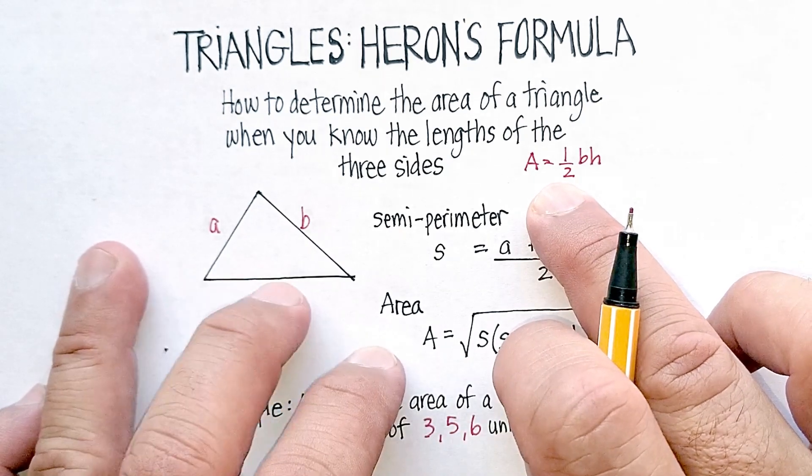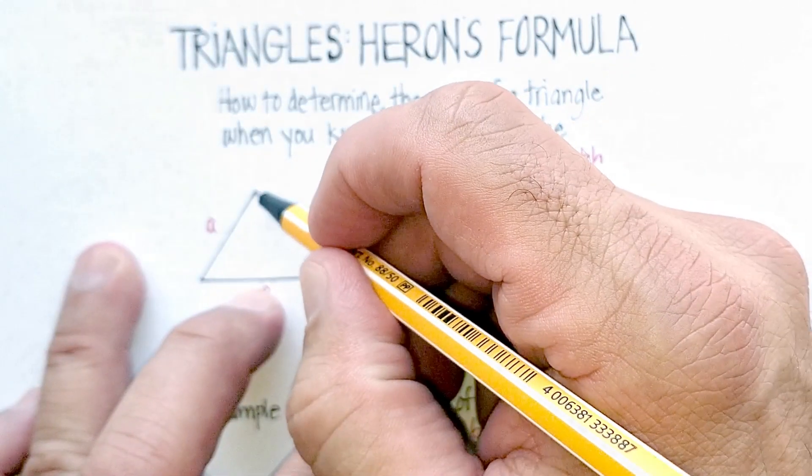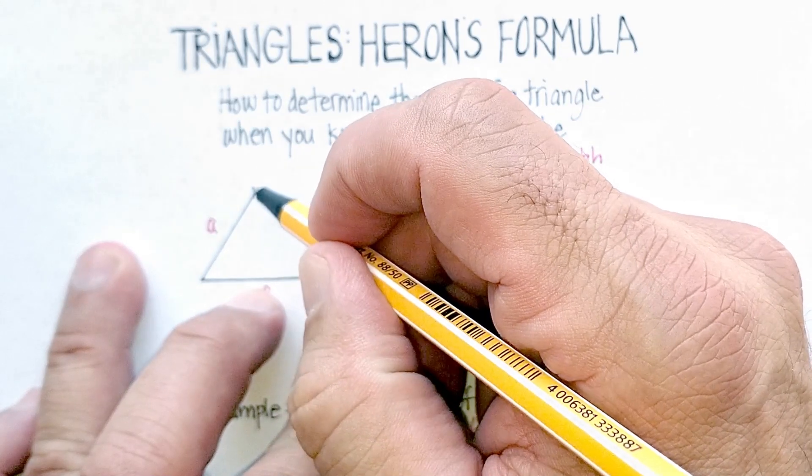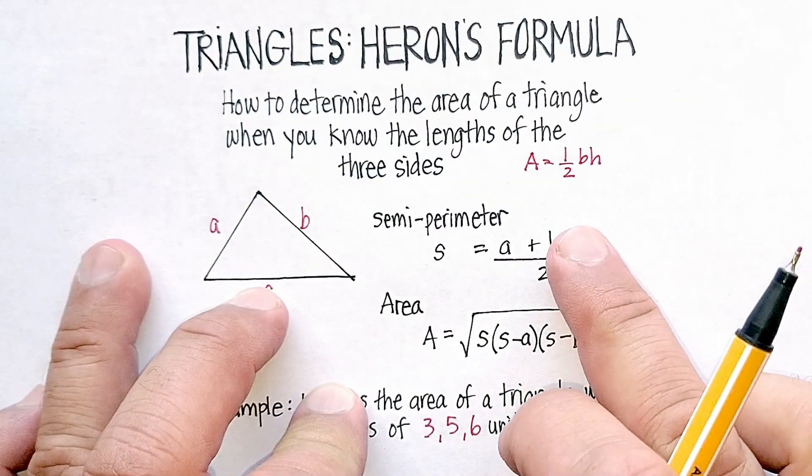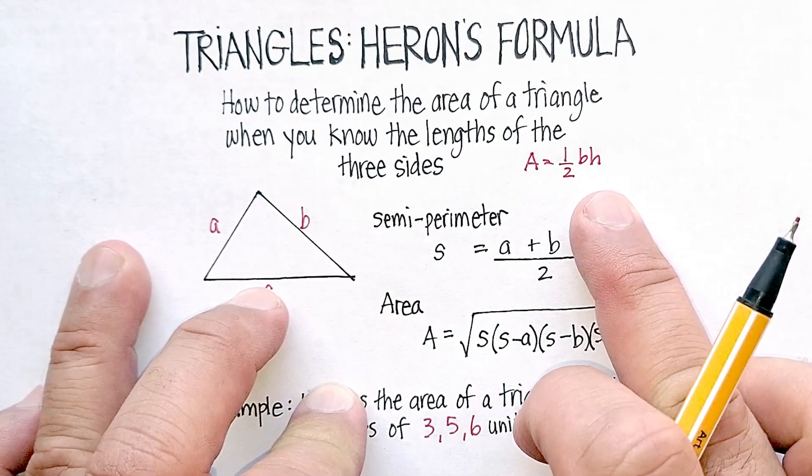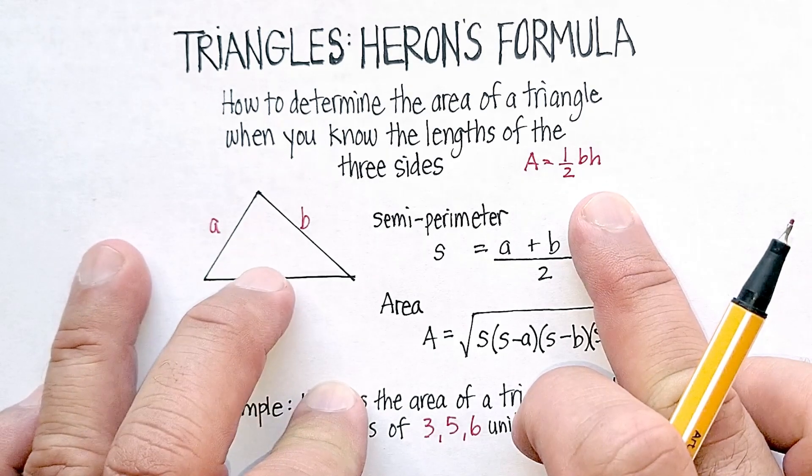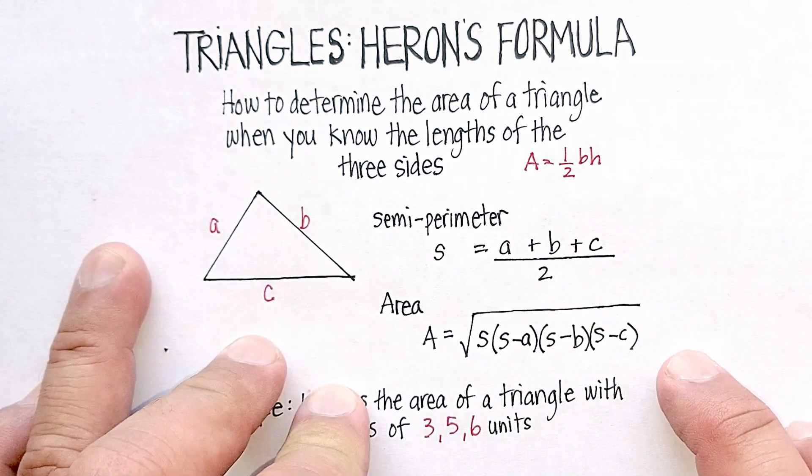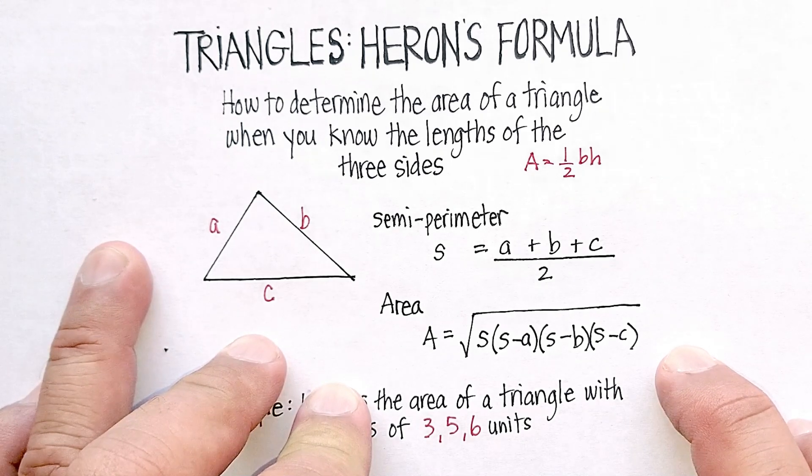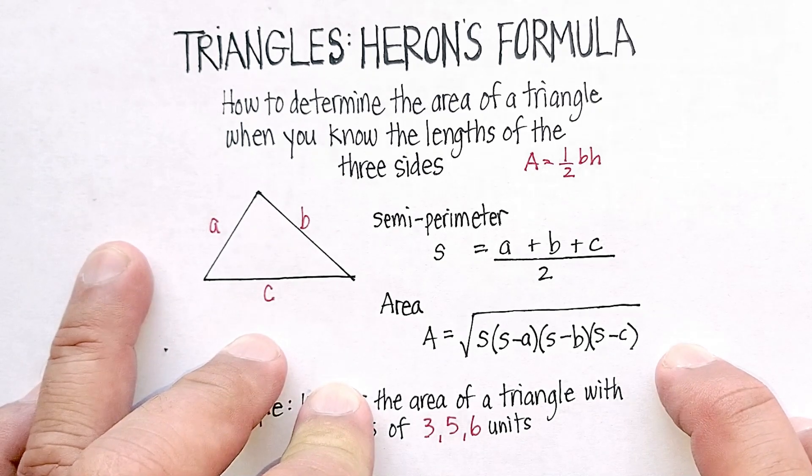For example, the base could be right here, but then this length right here would be the height. And that's what the H and the B mean. So we don't really know what the height is in this particular case. So how else can we figure out that area? And this is where Heron's Formula comes in.